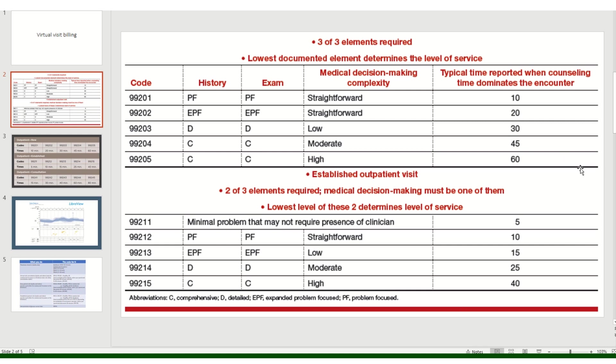Time spent can be documented and used for higher level billing, but I would not recommend using a lot of level fives — whether new or return — for a virtual visit. Originally, a level five is meant for a patient sick enough to be in the hospital. If you're determining that this patient is really sick, why are you doing a virtual visit with them at home? If they are that sick, they should be in the hospital. However, there is the occasional patient who's not that sick but you spend a large amount of time on education for nutrition and other things, and in that case you may be able to bill a level five based on the time spent.